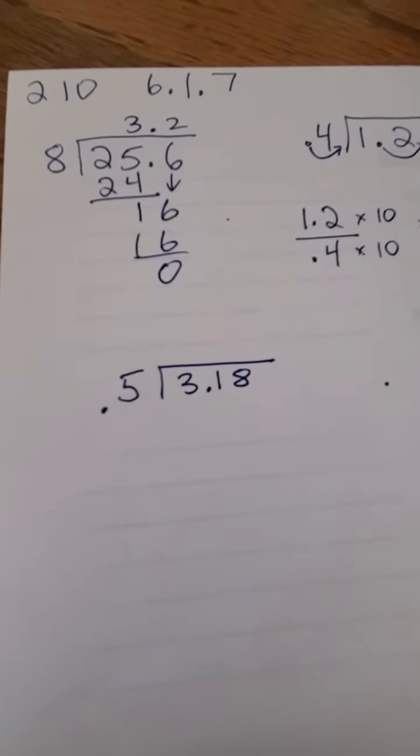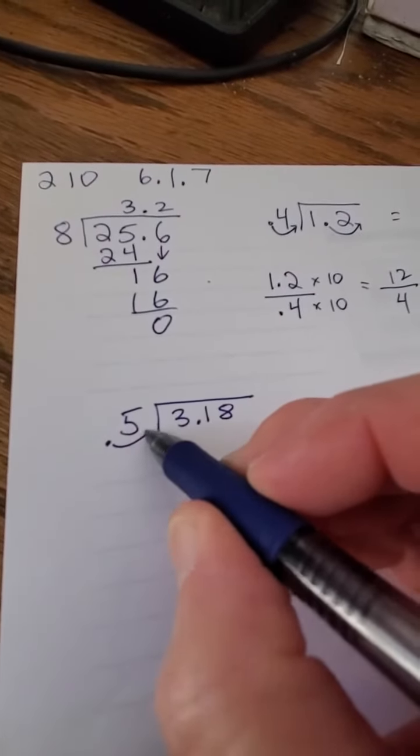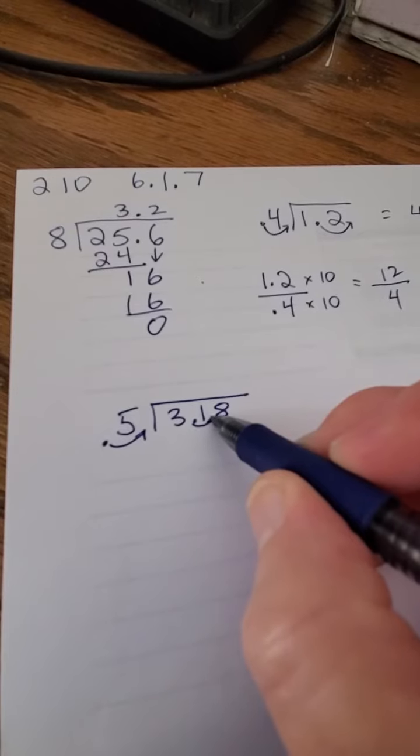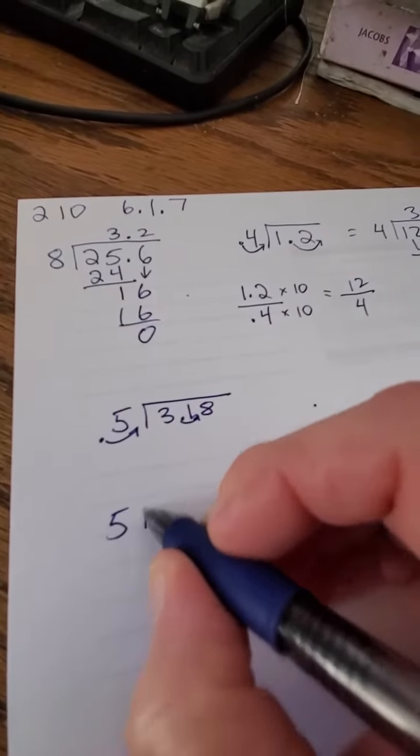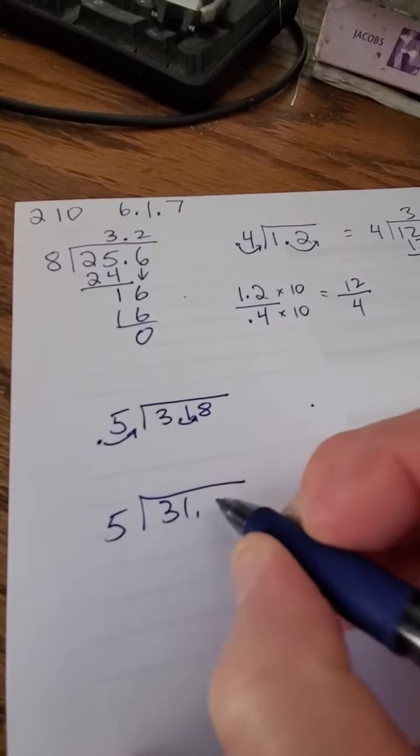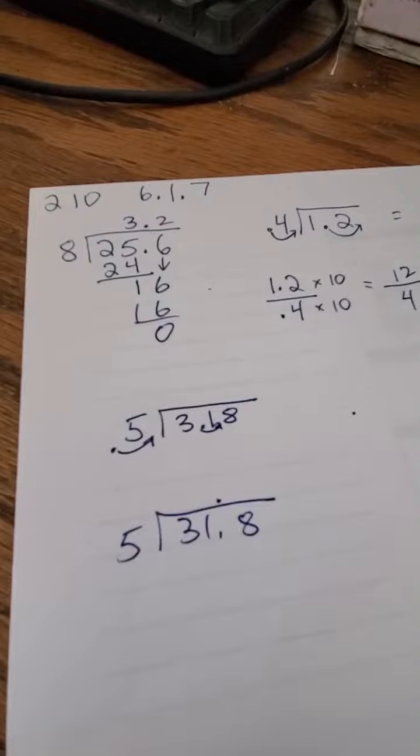3.18 divided by 0.5. Well, I need to move this one, so I have to move that one. So this now becomes equivalent to plain 5 divided into 31.8. And now, put that, move the dot up there, and now just do a regular division.